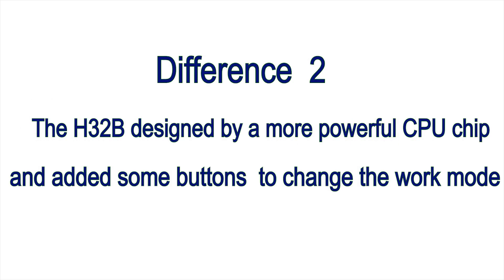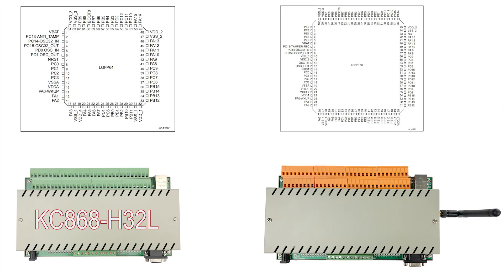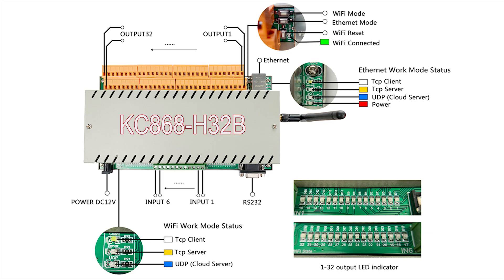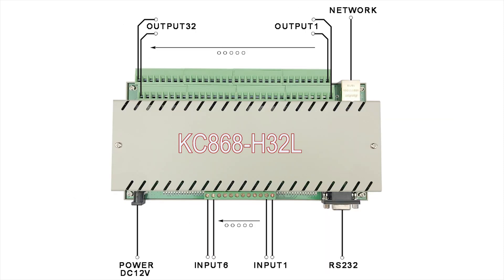Difference 2: the H32B is designed with a more powerful CPU chip and added some buttons to change the work mode. The chip of H32B has more pins and more flash capacity. The H32B has several buttons to change the work mode, but the H32L does not.